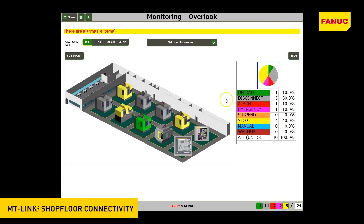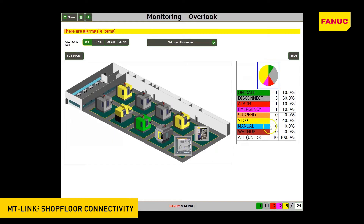On the right part of the screen, information of the machines in the current layout view are displayed. A listing of the number of machines by each state and a pie graph showing the proportion of each state is displayed. At the bottom part of the screen, the machine status showing the information of the total registered machines is displayed.